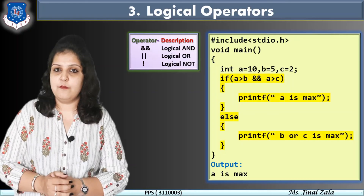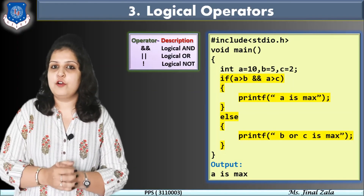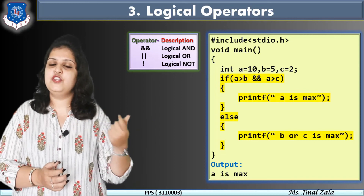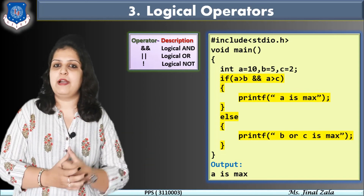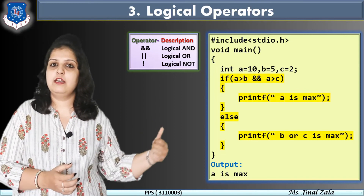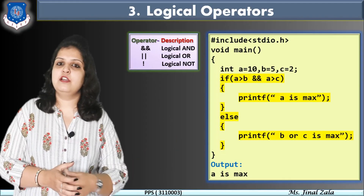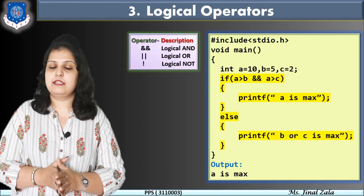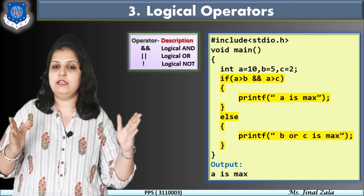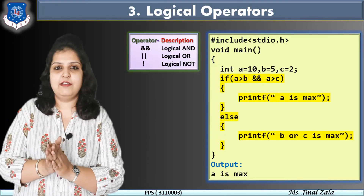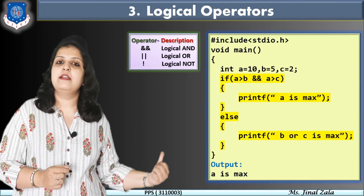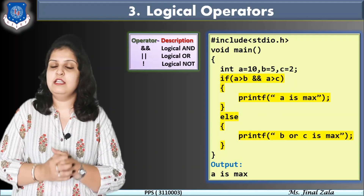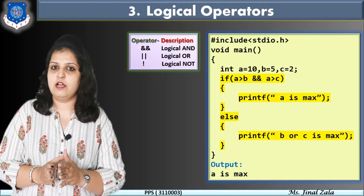This is the function of the AND operator. How can we use the OR operator? In the OR operator, if any one condition is true, then our true part will be executed. Here, instead of AND, I am using OR and the value of c is equal to 12. In that case, one condition is true and one is false, so 1 + 0 = 1 — our if part executes, that is, a is max. In this way we can use logical operators when we have multiple conditions.